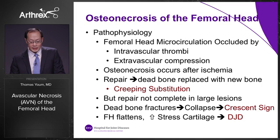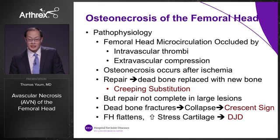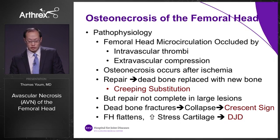The most commonly accepted pathophysiology is that the femoral head microcirculation is occluded by intravascular thrombi, and there is extravascular compression. Osteonecrosis or bone death occurs after ischemia. In the repair process, the dead bone is replaced with new bone — called creeping substitution — but the repair is not complete in large lesions. The dead bone fractures and collapses, producing a crescent sign on x-rays. The femoral head eventually flattens, causing increased stress on the cartilage and eventual degenerative joint disease.